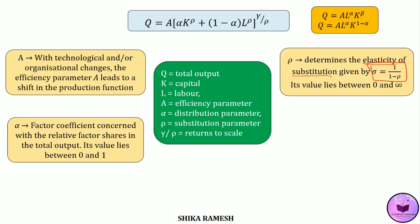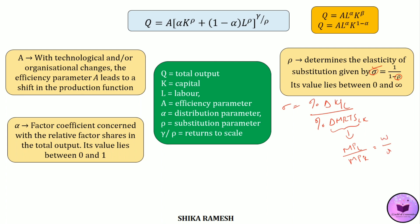The elasticity of substitution basically tells us the ease of substitutability between two factors. If we know the value of rho and plug it into the equation σ = 1/(1−ρ), we can find out the elasticity of substitution of the production function. The formula for calculating elasticity of substitution is the percentage change in the K/L ratio divided by the percentage change in the marginal rate of technical substitution. Also, MRTS of labour for capital equals MPL/MPK, which equals W/R. So a change in MRTS — meaning a change in factor prices — leads to a change in the capital-labour ratio, which is the elasticity of substitution represented by rho.